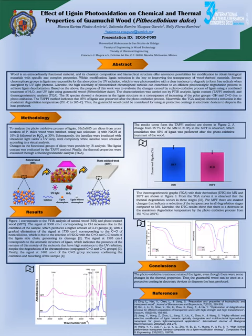The infrared spectra indicate the presence of the lignin structure that has high resistance to ultraviolet light, despite the degradation of its chromophore groups. An increase in the carbonyl group is observed, confirming the oxidation and discoloration of the sample. The application of the Klason method indicates a change in the lignin content from 25.7% to 21.9%, establishing that 85% of the lignin was preserved after the photo-oxidative treatment of the wood.